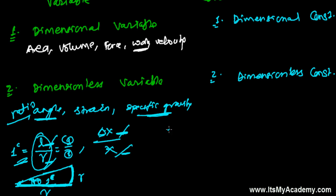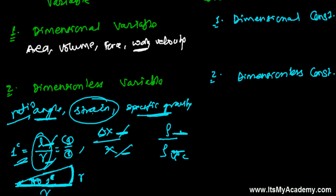Similarly, specific gravity is the density of any object divided by the density of water at four degrees Celsius. Since both numerator and denominator have the same unit of density, the units cancel and there is no dimension. Though the values are variable — strain will be different for different situations, and specific gravity differs from object to object — they are dimensionless.